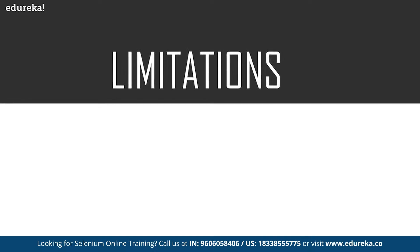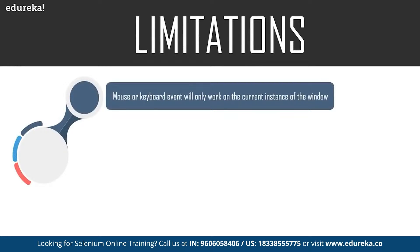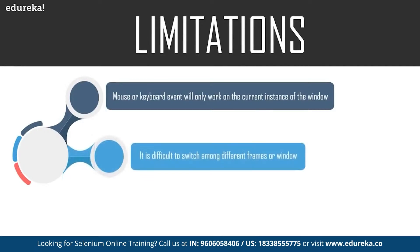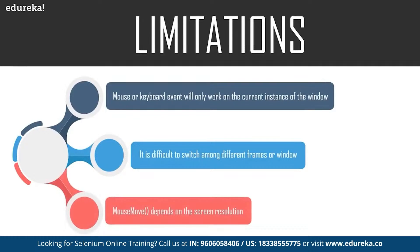Now let's take a look at the limitations of this Robot class. The mouse or keyboard event will work only on the current window — it is difficult to switch among different screens or windows. For example, if a Robot event is executing and code execution moves to another window, the mouse or keyboard event will still remain on the previous window. Methods like mouseMove depend on the screen resolution, so tests using XY coordinates will behave differently on different screens. If you are running tests in a virtual machine, then the risk of script failure is higher.